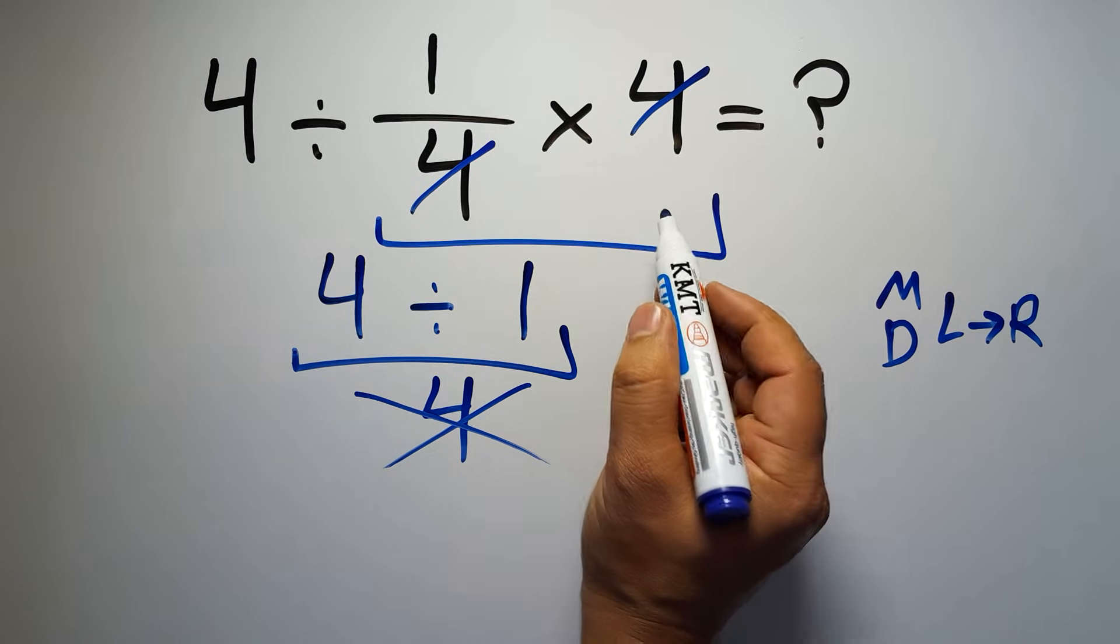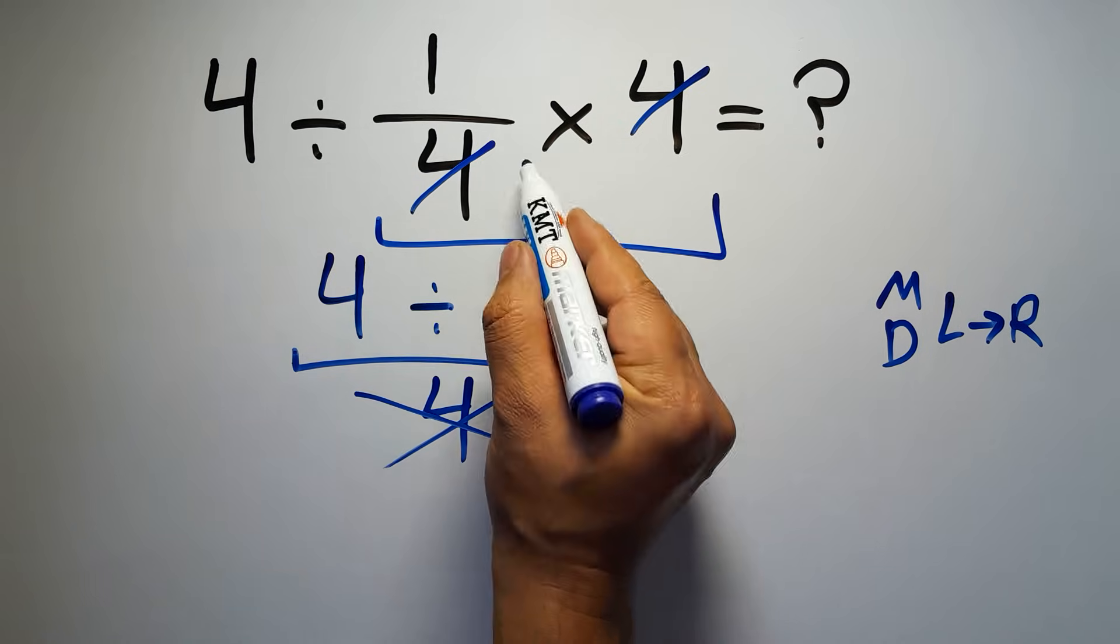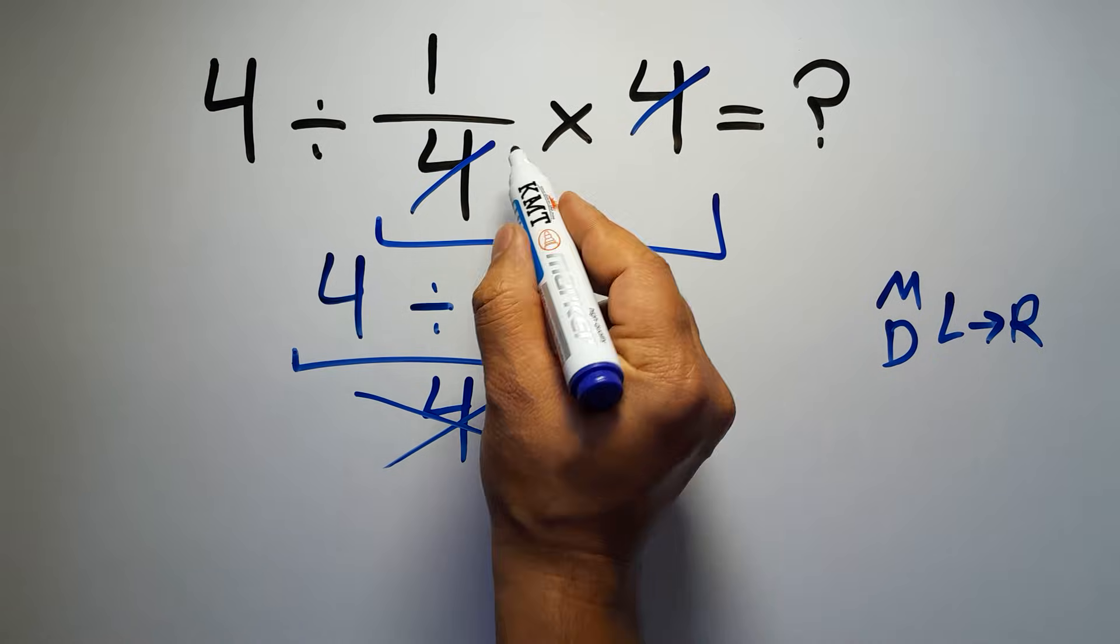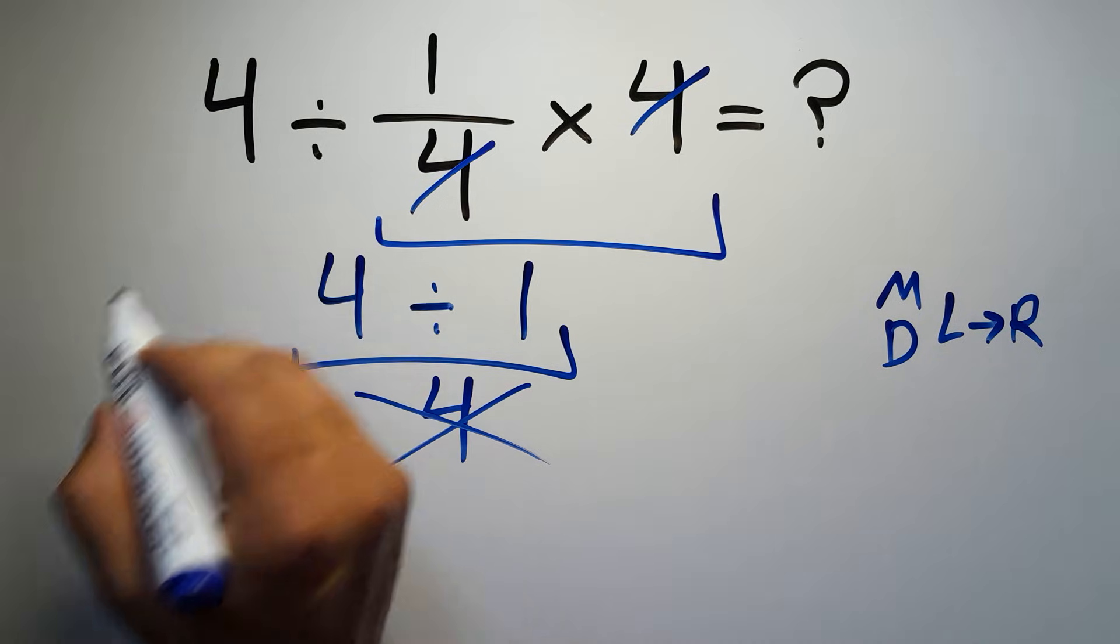So here, first we have to do this division, then this multiplication. If we do this multiplication before this division, it is wrong.